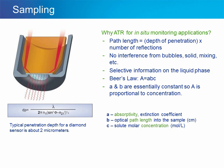Why attenuated total reflectance for in-situ monitoring applications? The path length is equal to the depth of penetration times the number of reflections on the sensor. You will observe no interference from bubbles, solids, or mixing, and you'll get selective information on the liquid phase in the spectrum. The spectrum will conform to Beer's Law: absorbance equals the product of the molar absorptivity, path length, and concentration. Since molar absorptivity and path length are essentially constant, absorbance is proportional to concentration. Penetration depth is a function of the wavelength of the radiation, the refractive indices of the sensor and liquid, and the angle at which radiation impinges on the sensor. A typical penetration depth for a diamond sensor is about 2 micrometers.